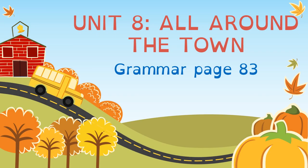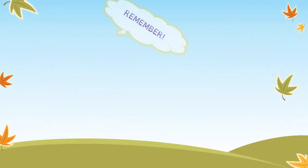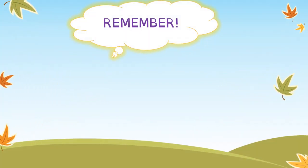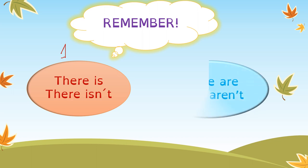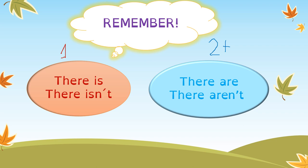Hello everyone. Today we are going to continue with Unit 8, 'All Around the Town', and we are going to start with the grammar on page 83 of your Pupil's Book. First, we are going to remember 'there is' and 'there are'. Do you remember when we use 'there is' or 'there isn't'? We use 'there is' or 'there isn't' when we talk about only one thing — for singular. We use 'there are' or 'there aren't' when we talk about two or more things — for plural.